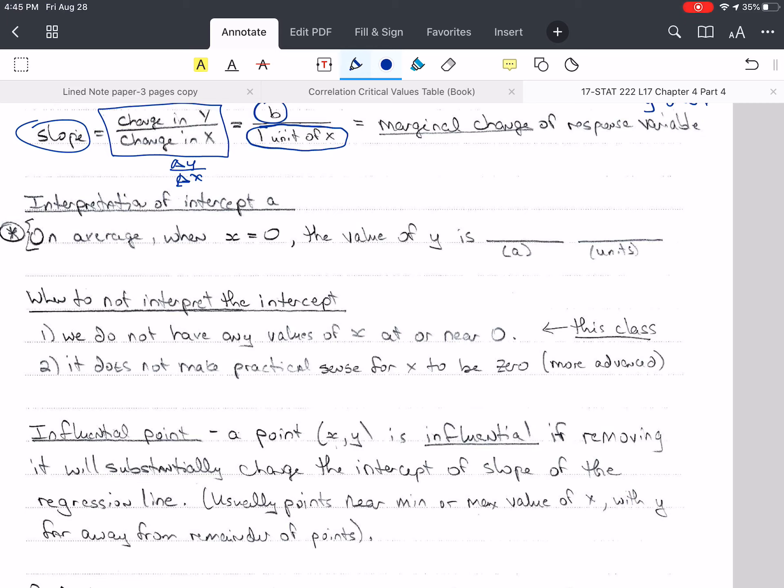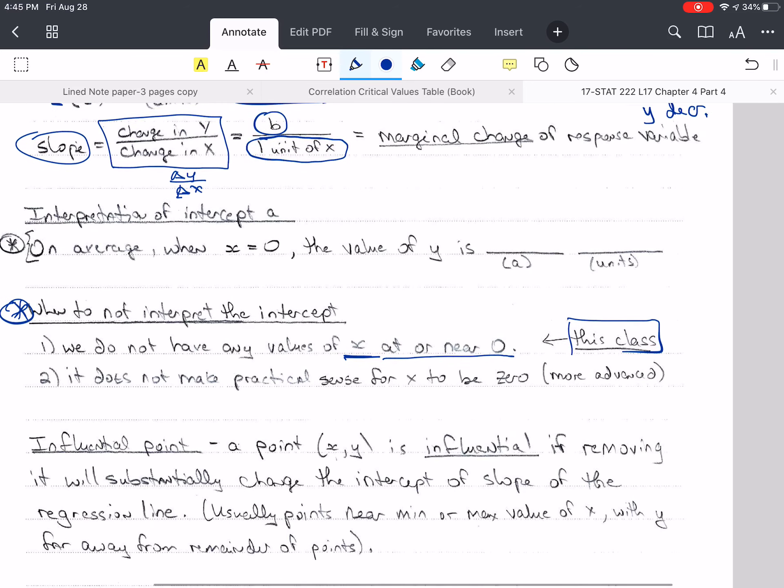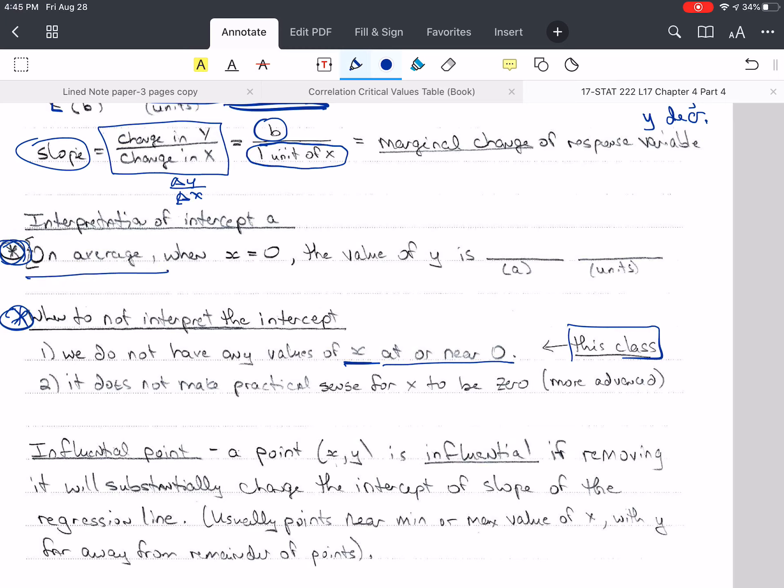Let's talk about the interpretation of the intercept. Before we interpret the intercept, we need to know when not to do this. For this class, I'm only going to make you look at this. Do I have any values of x in my data that are at or near zero? If not, I don't interpret the intercept. The other thing is, it doesn't make any practical sense for x to be zero. Then we wouldn't do that either. But I find that students actually have quite a difficult time determining this, so we're not going to get into that in this class. Here's our equation. On average, that's very important. When x is zero, the value of y is, and we put in the value of a, whatever that is here, and then we put in the units that y is in.